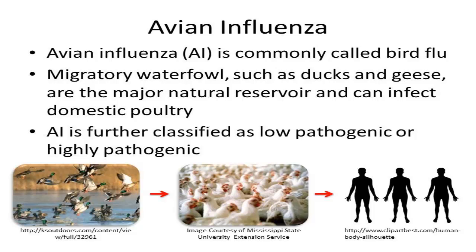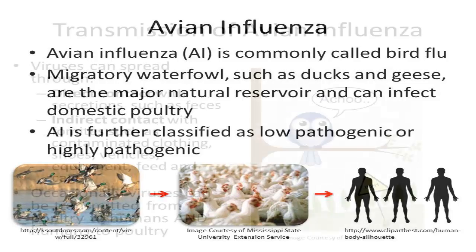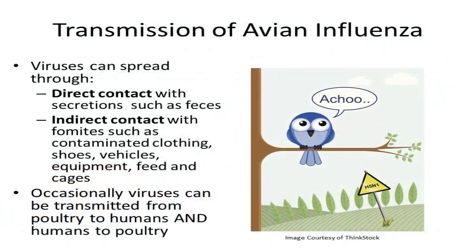Three prominent subtypes of avian influenza A viruses known to infect both birds and people are the subtypes H5, H7, and H9. Avian influenza viruses can be spread through direct contact with secretions from infected birds, especially feces.